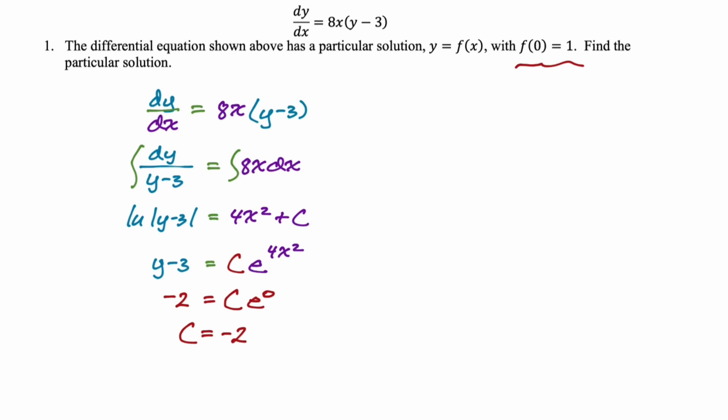And then we go back to the step where we first encountered, after we exponentiated, we have this and this. So y is going to be 3 and then minus 2e to the 4x squared. So what I did was I moved 3 to the other side because you do want to isolate y because you're looking for y equals f of x. This is good. So let's take a look at the next question.